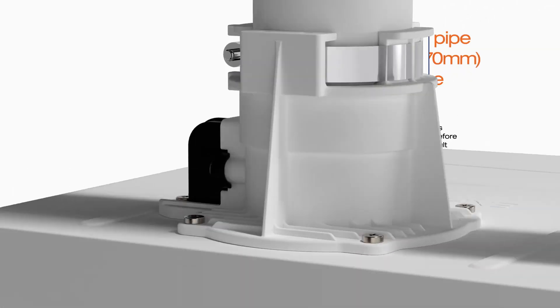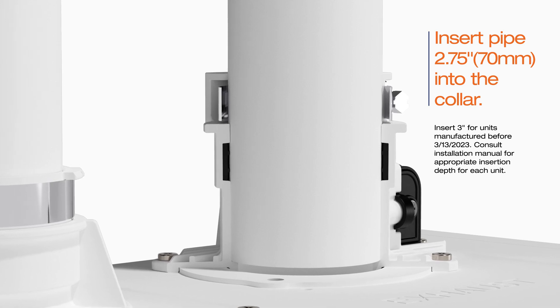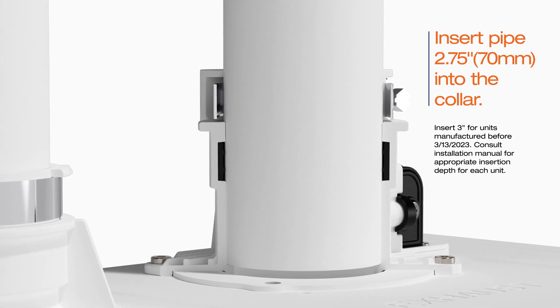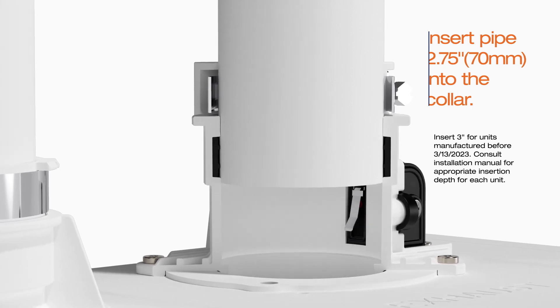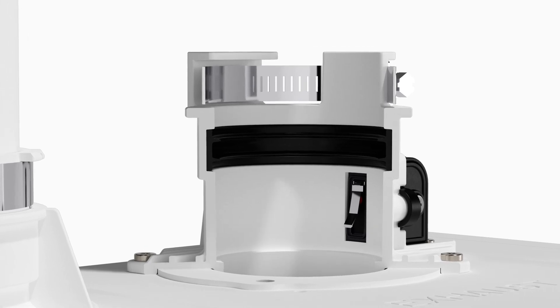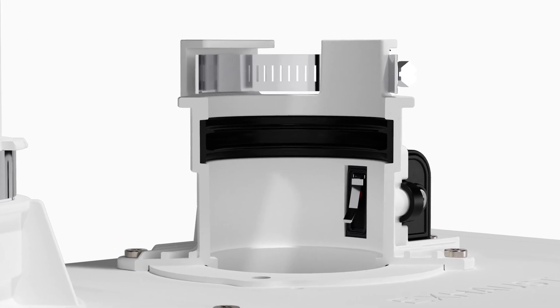Fully insert the exhaust pipe into the collar past the seal to engage the VID. Refer to the installation manual for the required insertion depth. The detector is located inside the vent collar to check for proper pipe insertion.